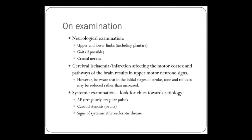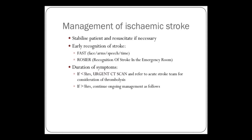And then signs of systemic atherosclerotic disease — do they have signs of peripheral vascular disease? How do you manage ischemic stroke? Whenever you get asked in an exam, the first thing you say is stabilize and resuscitate the patient — A, B, C. The key to effective management is to recognize stroke early. The one advertised to the public is the FAST test: Face, Arm, Speech, and Time. ROSIER is another method some hospitals use — a questionnaire looking at weakness, speech deficit, and duration.